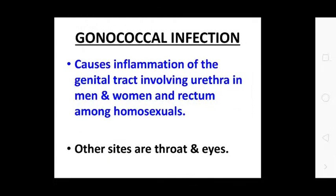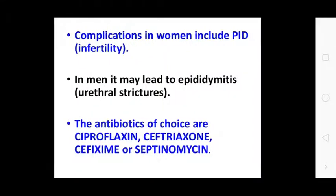Clinical spectrum: Gonococcal infections cause inflammation of the genital tract, involving the urethra in men and women, and the rectum among homosexuals. Other sites are the throat and eyes. Complications in women include PID and infertility. In men, it can lead to epididymitis and urethral stricture. Antibiotics of choice include ciprofloxacin and ceftriaxone.